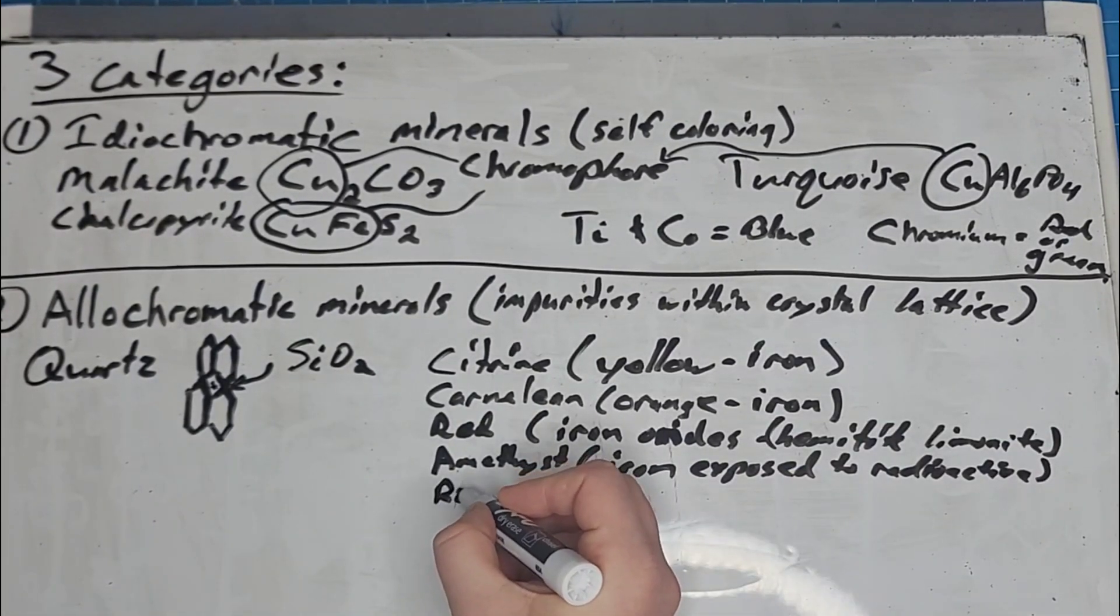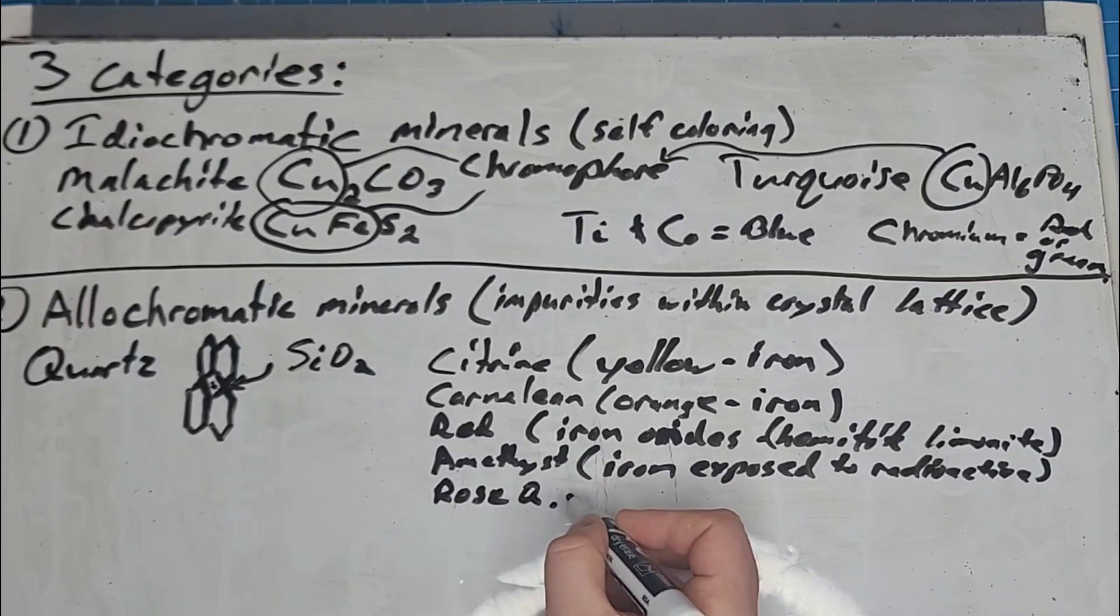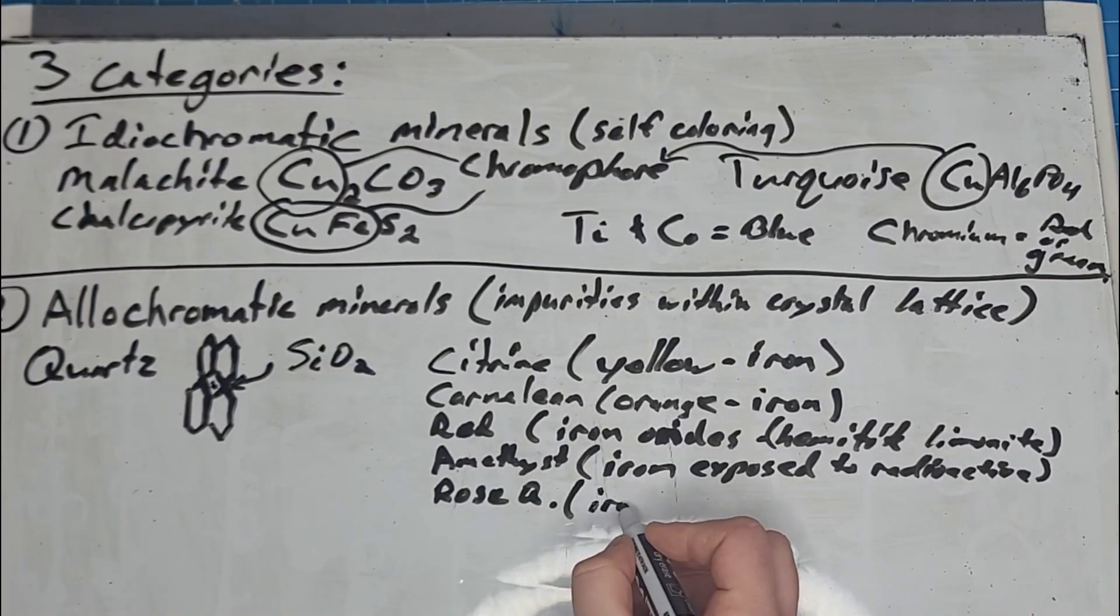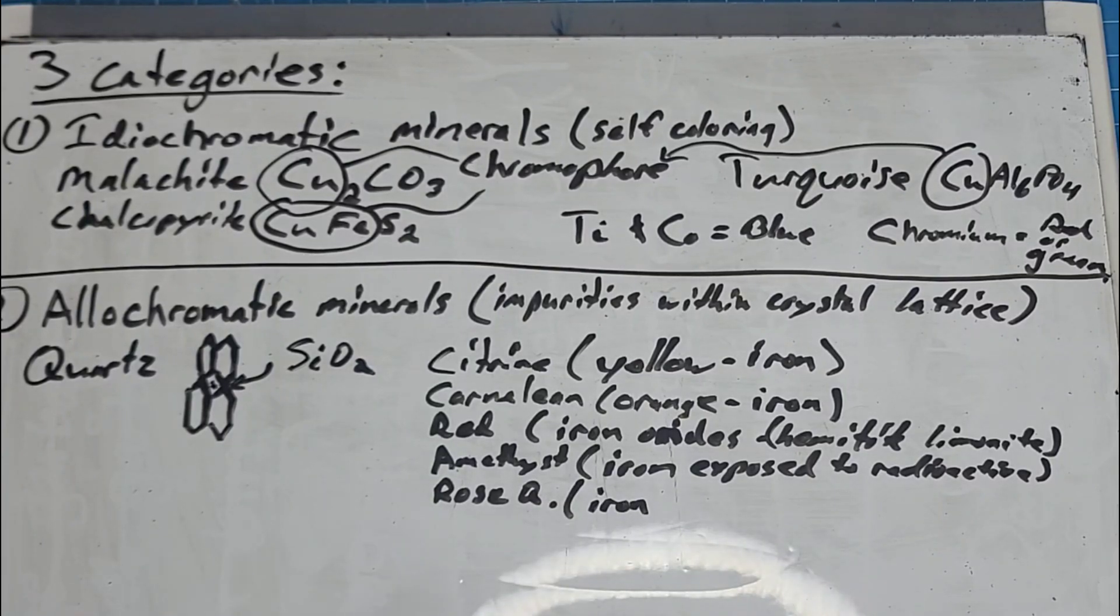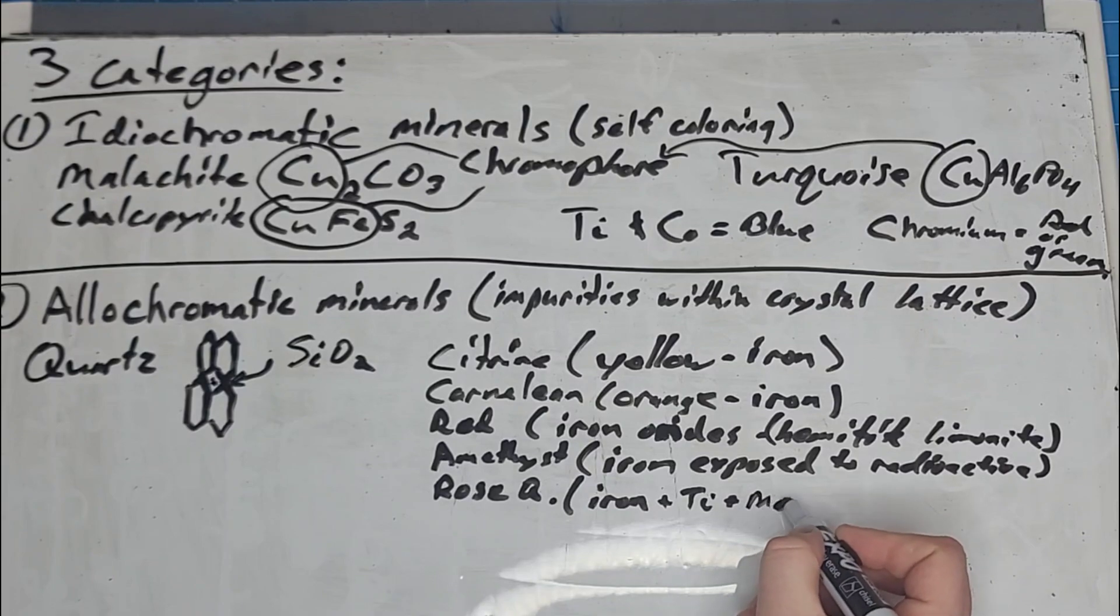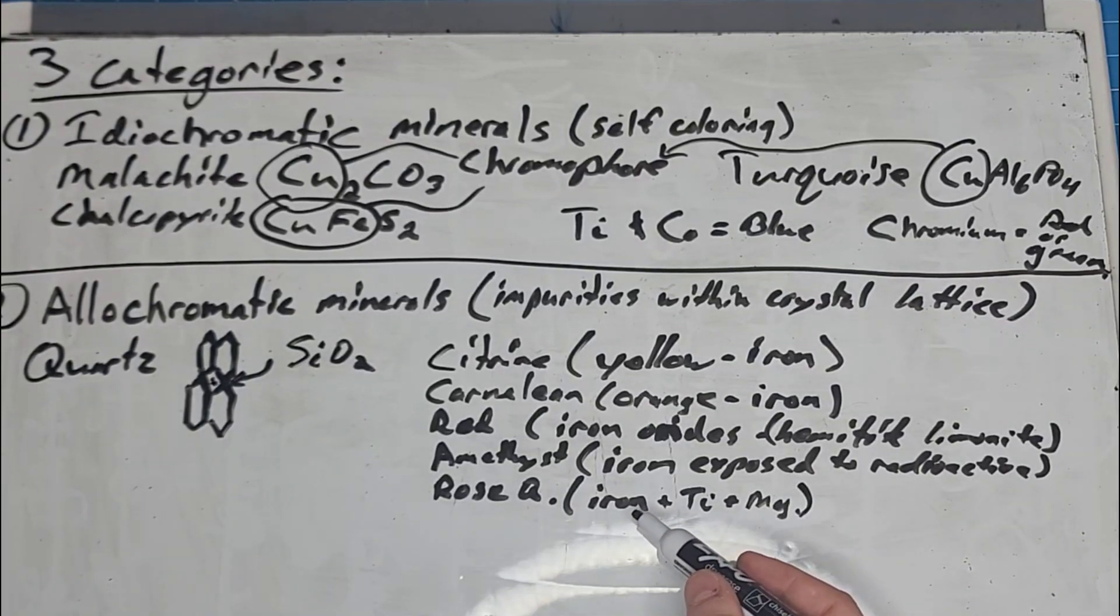Another common example is rose quartz. What causes rose quartz to be pink? Well, if we stick with the theme, we're going to be right. It is iron. But not just iron. There's other things that cause rose quartz to be pink in combination. One of those is titanium. And another one is manganese. Depending on the percentage of each within the quartz determines the hue of the pink that you get. The most desirable would be the really translucent deep pink color, usually caused by more titanium.